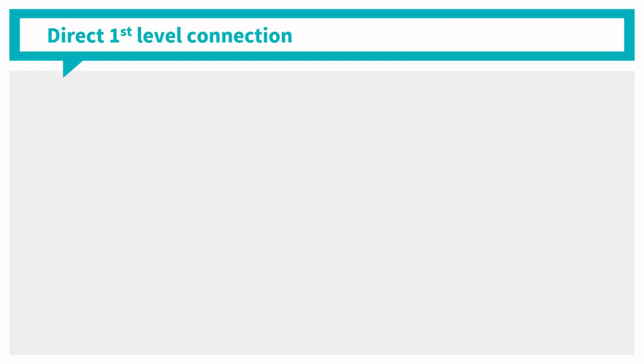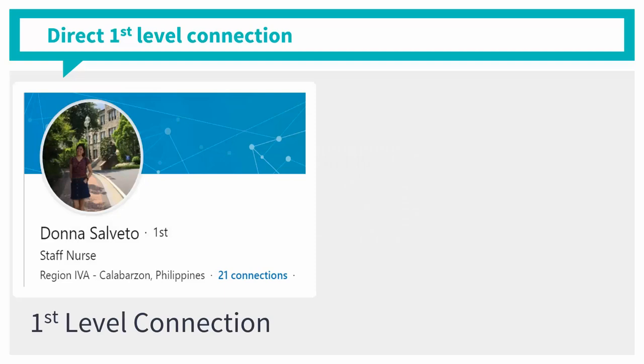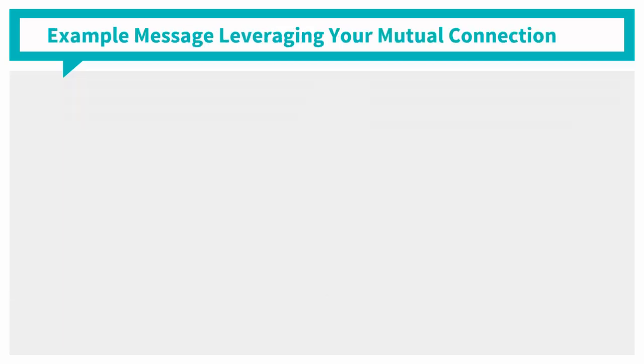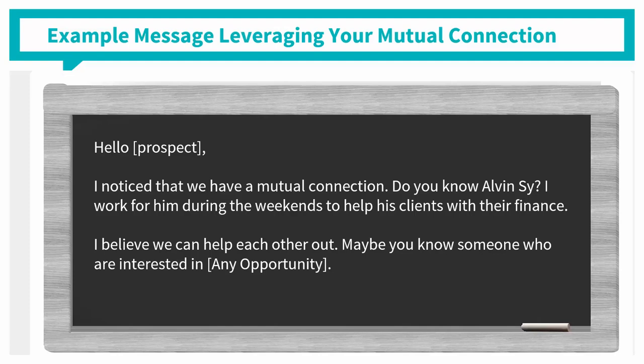Leverage your mutual connection. If you want to connect with a LinkedIn member who is a direct first level connection of your first level connection — in short, your second level connection — you may ask them to introduce you to that person. Since your connection knows you, and as he introduces you to his connection, there's a huge possibility of a successful connection. When you're already connected, you can message them introducing how you and your mutual connection know each other professionally. That way, you will catch your prospect's interest and attention.